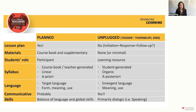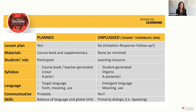For a planned lesson: there is a lesson plan; materials come from the course book, supplementary materials, and teacher-written materials; the student is a participant; the syllabus is generated from the course book, teacher, or institution; it's a linear, a priori syllabus decided before the course starts. In terms of language, we have target language - the lexical sets and grammar points listed in your course book contents. The focus is on form, meaning, and use; it's communicative; and there's a balance of language skills and global skills.